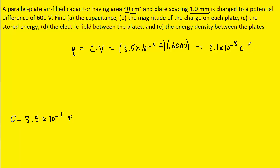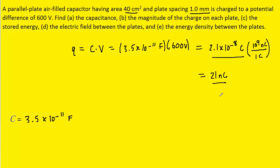If we needed to convert that into nanocoulombs, we could say that one coulomb is equivalent to 10 to the ninth nanocoulombs. When you perform that computation, you get 21 nanocoulombs. So either answer in coulombs or nanocoulombs would be correct.